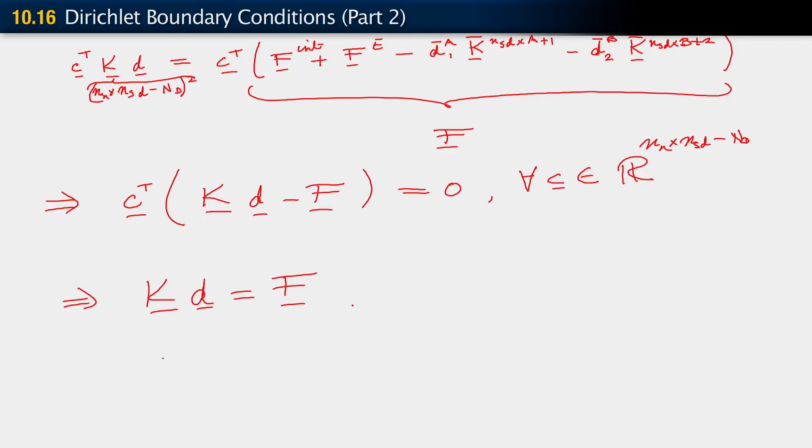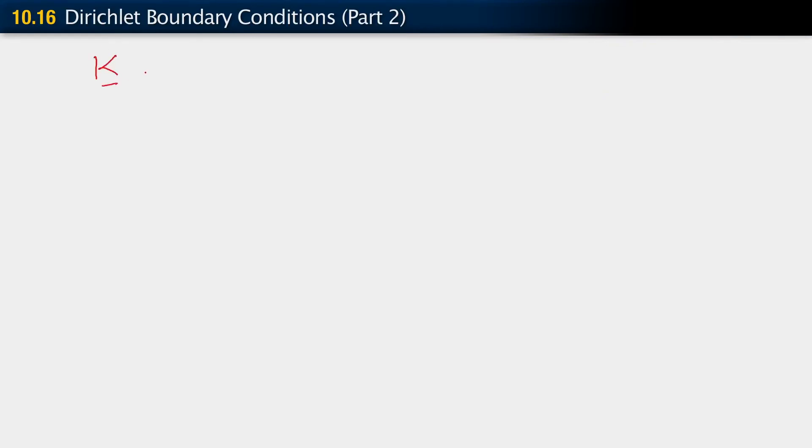I should make one remark here that since we are talking of d being defined as K inverse f, under what conditions does this solution exist? Solution exists if our K matrix is invertible of course. Under what conditions is it invertible? Can you think of what it is that guarantees invertibility of that matrix?